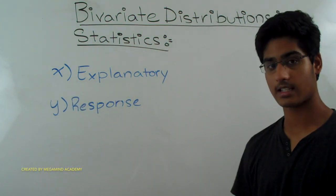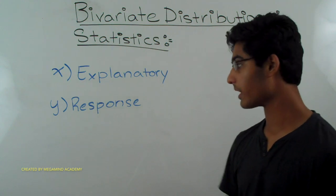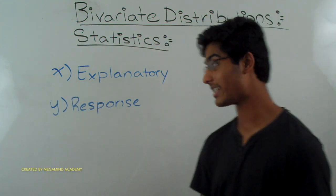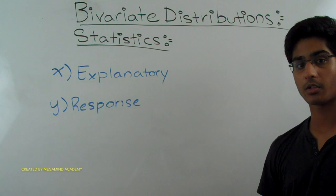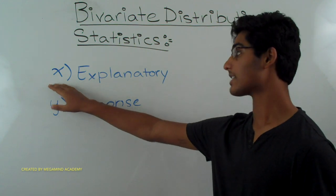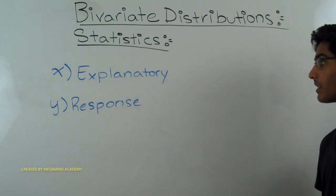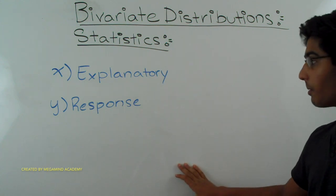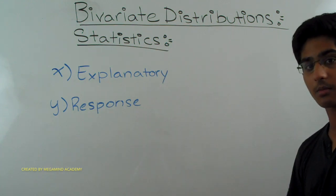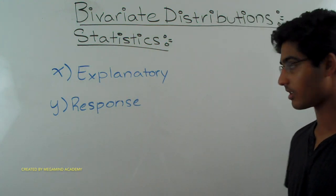The explanatory variable on a graph is displayed on the x-axis, and the response variable is displayed on the y-axis. The variable on the x-axis is the independent variable, and the one on the y-axis is the dependent variable. So the explanatory variable explains how we got to the response variable — the response is dependent upon what the explanatory variable is.